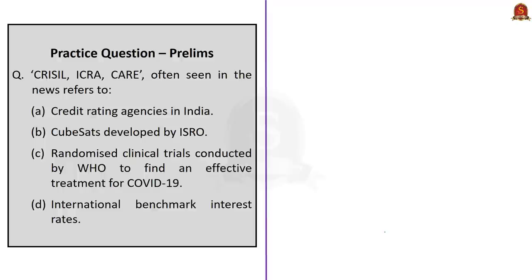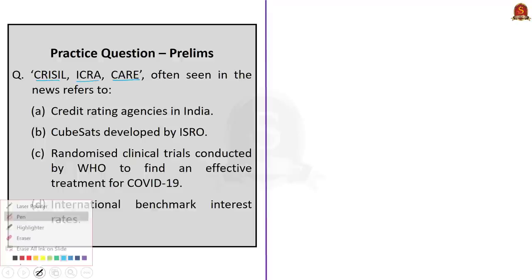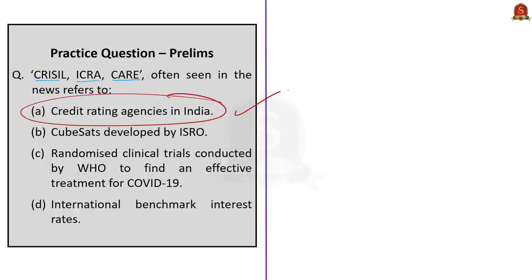Now see this question: CRISIL, ICRA, and CARE, often seen in news, refers to — the correct answer is option A, credit rating agencies in India.